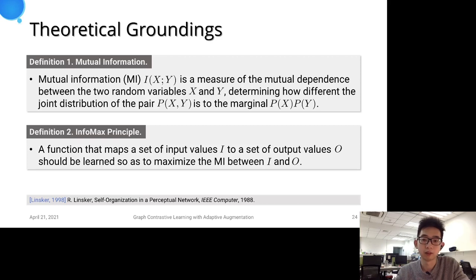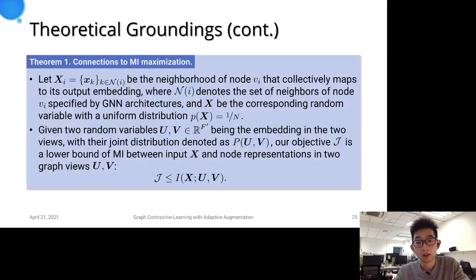In representation learning literature, the InfoMax principle is a guideline for learning good representations by maximizing the mutual information between the input and output of our neural network. We first draw the connection between our objective and the mutual information maximization.